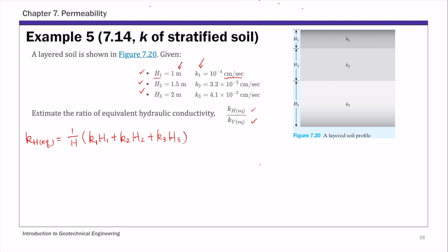But h here, they cancel out. So you're going to get centimeter per second unit for equivalent hydraulic conductivity. If you plug in numbers, h is sum of h1, h2 and h3.